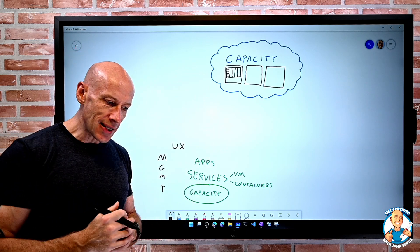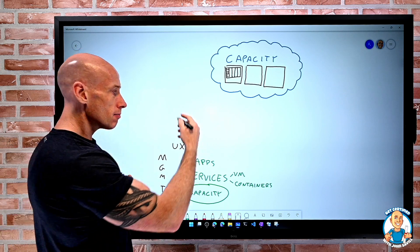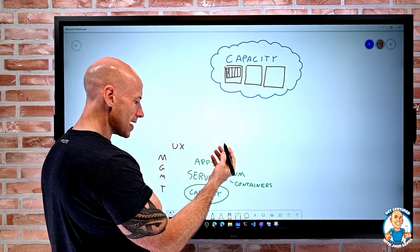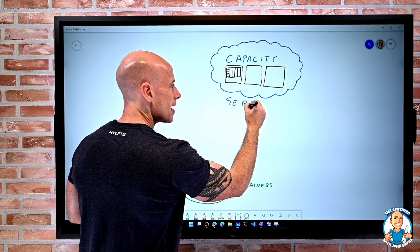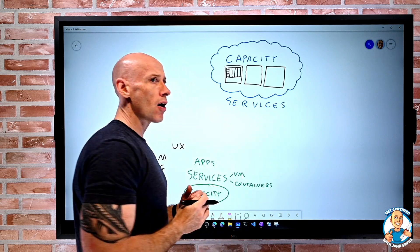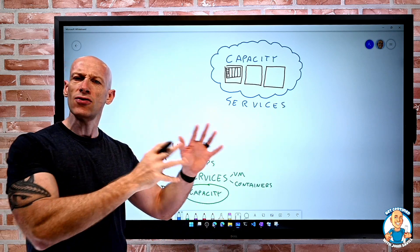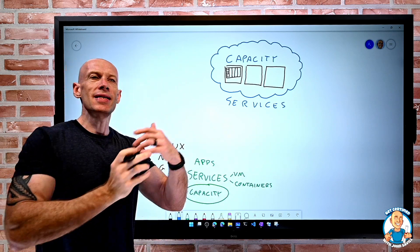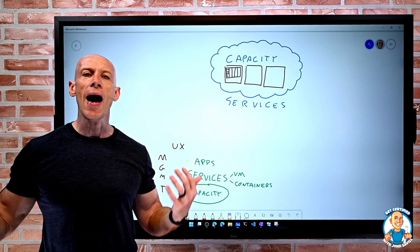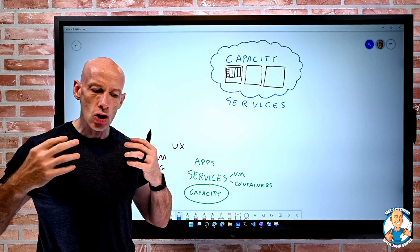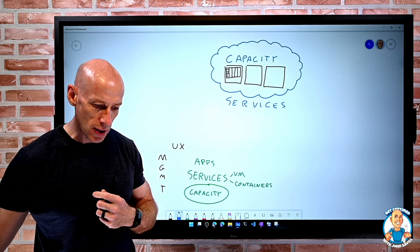So there's this whole bunch of capacity in the cloud. And it offers, just like down here, services. Now, in the cloud, those services are very diverse. Yes, there's VMs. Yes, there's containers. But there's databases, there's artificial intelligence, there's entire app services. There's just a huge amount of different functionality exposed to us.